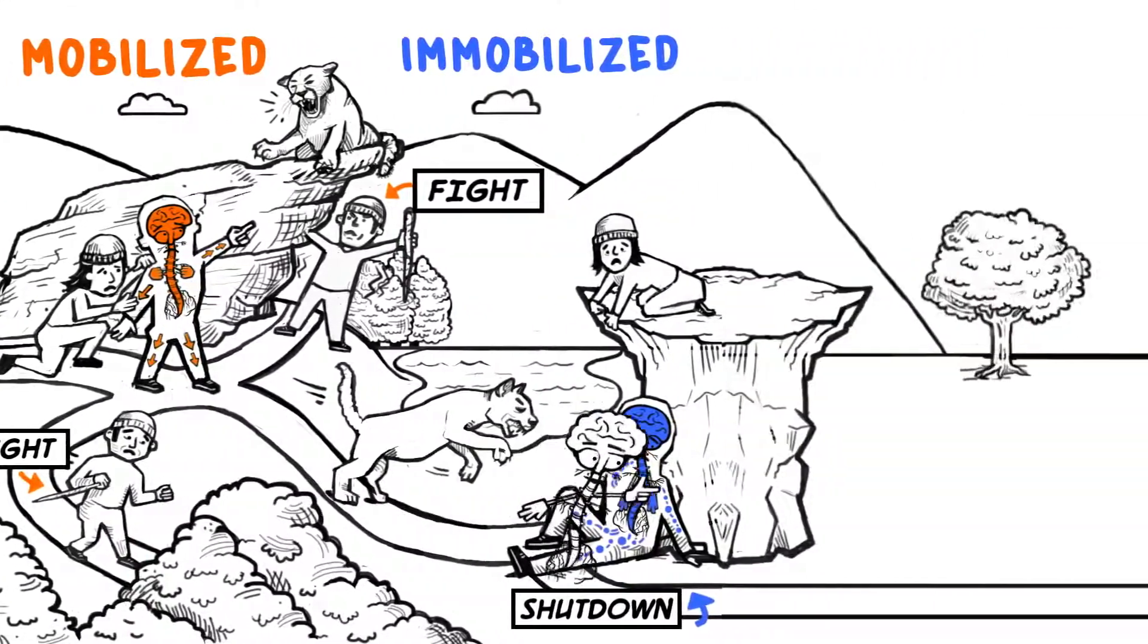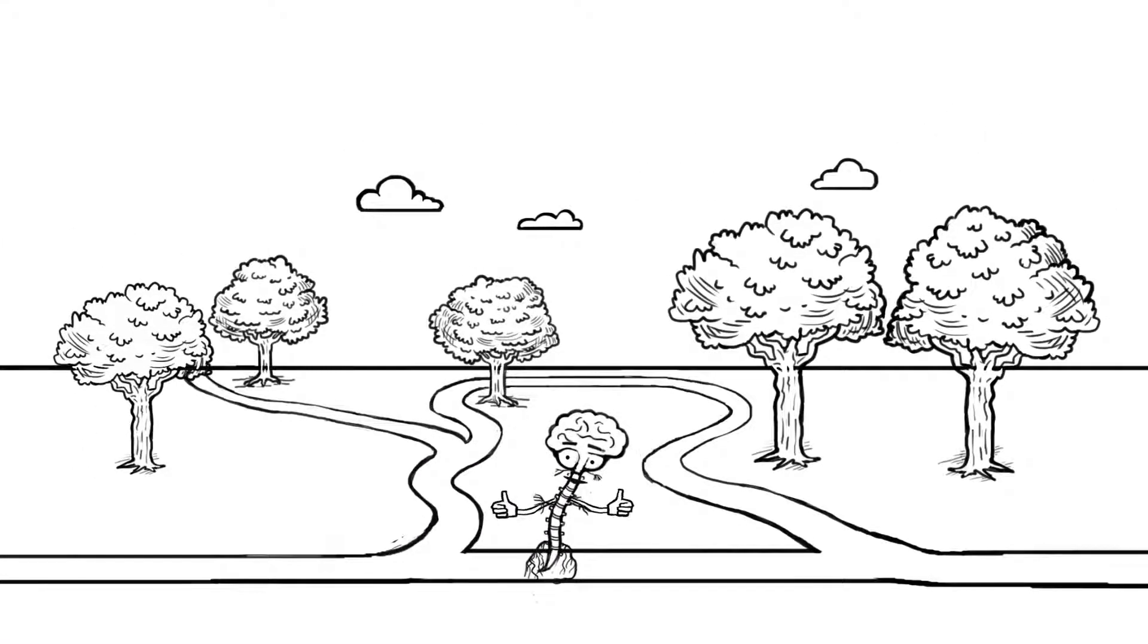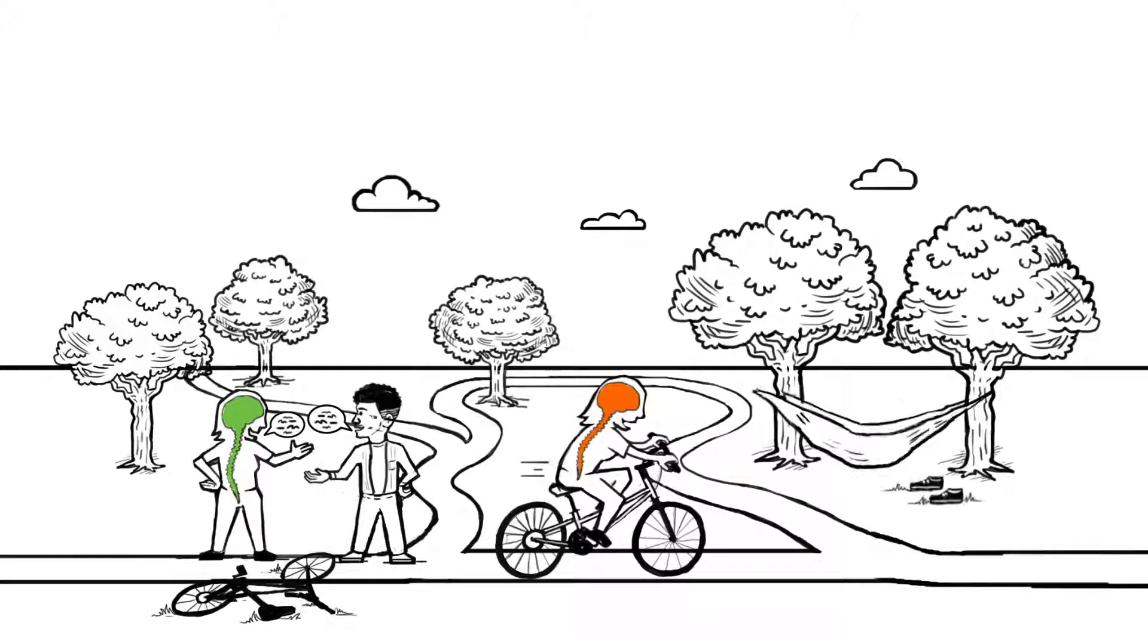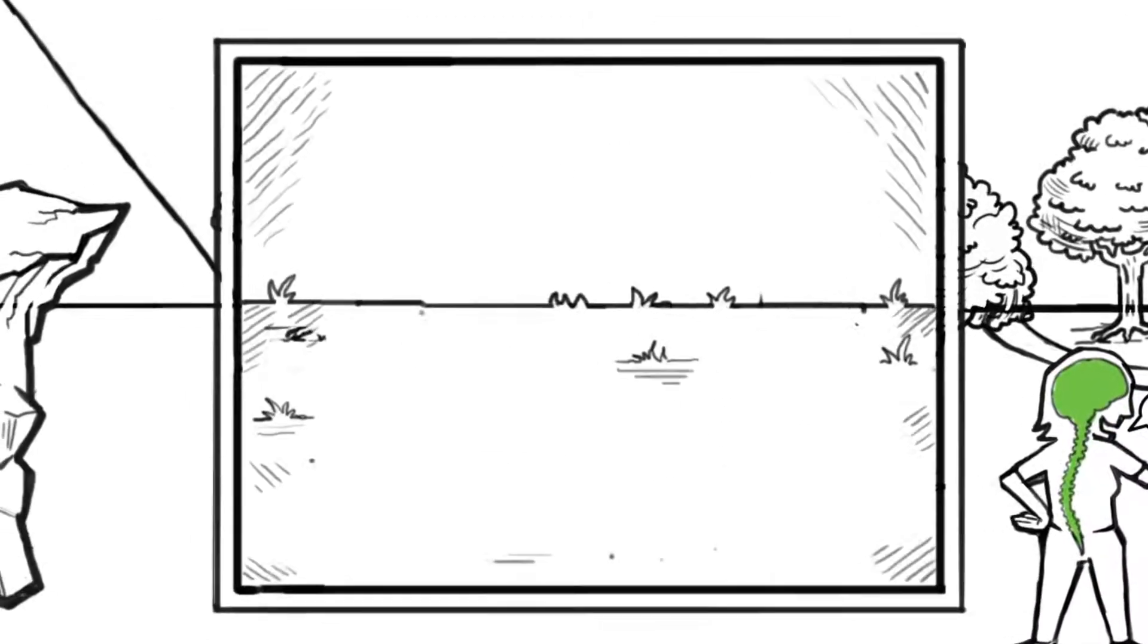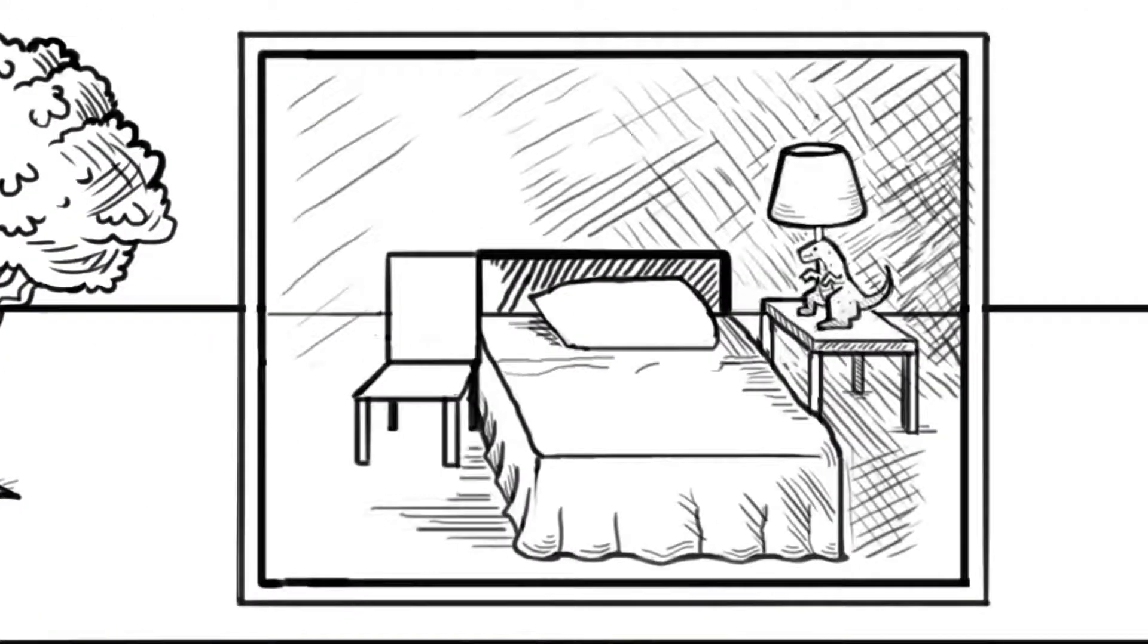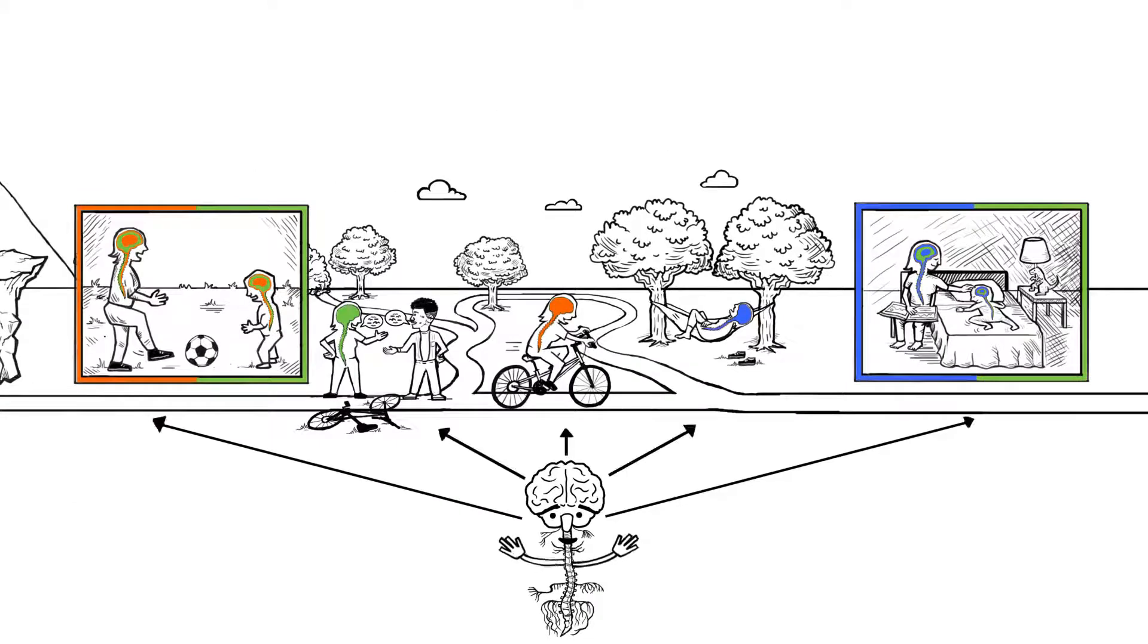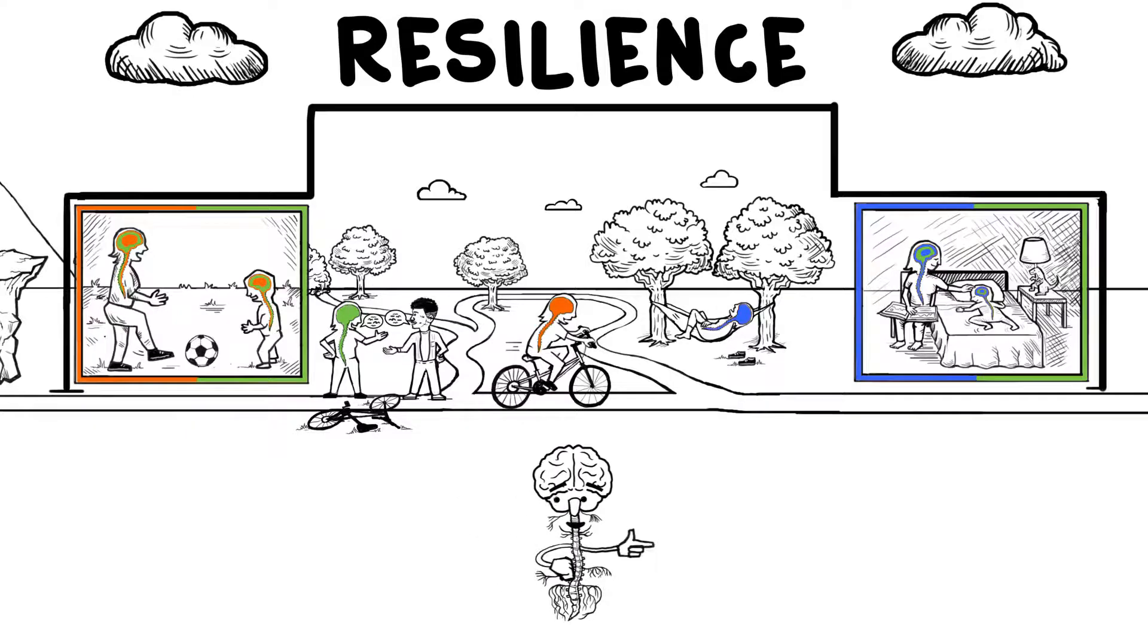ANS doesn't just use these states for survival. It uses them to navigate through the world each day. When ANS functions well, it moves fluidly from one state to another, one minute mobilized and ready for action, and the next resting and recovering. ANS will often blend states together. When we play, ANS combines the mobilized and safe states. And when we are intimate with loved ones, it combines immobilized and safe states. When ANS can stay flexible and fluid like this, it helps us manage and become resilient to stress and negative events. We're able to bounce back and move on.